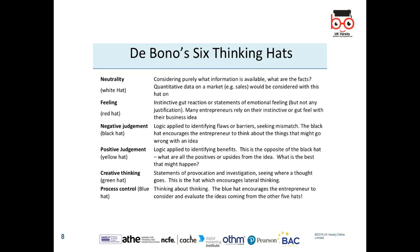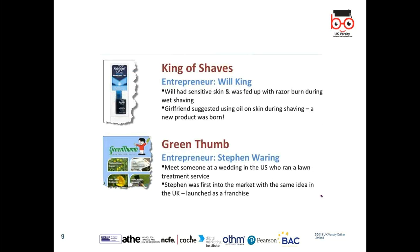The Green Hat is creative thinking — statements of provocation and investigation, seeking new thoughts. This is the hat that encourages lateral thinking. The Blue Hat is 'thinking about thinking.' It encourages the entrepreneur to consider and evaluate what implementing this idea will bring, and to review the conclusions from the other five hats. So the six hats are: White, Red, Black, Yellow, Green, and Blue.